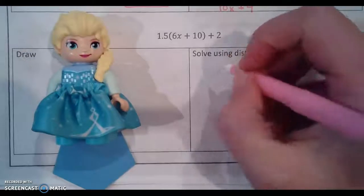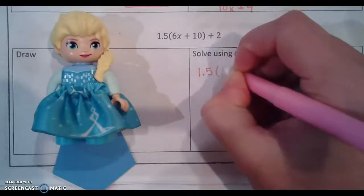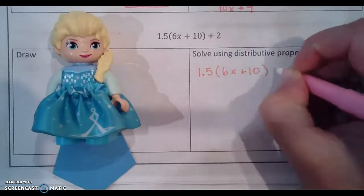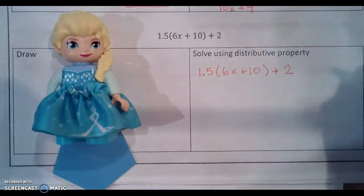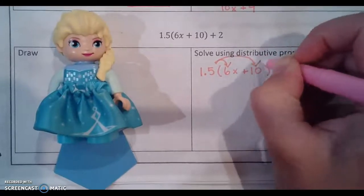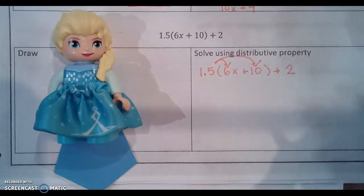Step one. Write down your question. Step two. Draw your arrows. Step three. Multiply. But only multiply by what is inside of the parentheses.